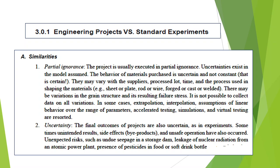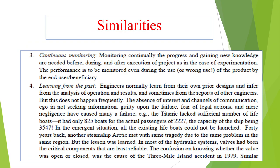In both projects and standard experiments, uncertainty may occur — unexpected things such as unintended results, byproducts, or unsafe operations. Unexpected risks may also happen, such as leakage of nuclear radiation, power plant incidents, or pesticide-related events.